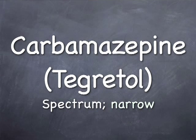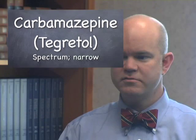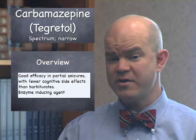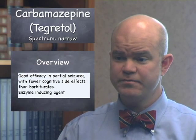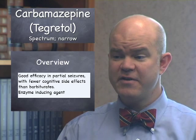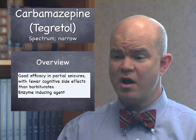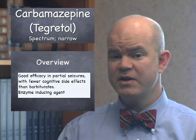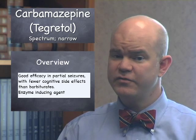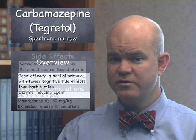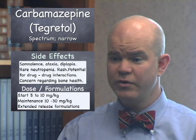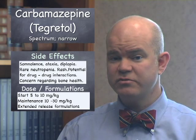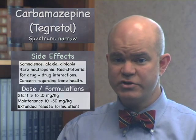Carbamazepine or Tegretol is another first generation anticonvulsant. This is a narrow spectrum agent, useful for partial seizures, and importantly it can make generalized seizures worse. It's generally thought to be effective with fewer cognitive side effects than the barbiturates. However, it is an enzyme-inducing agent, so it can interfere with the metabolism of other medications and may have adverse effects on bone health. Children can also experience ataxia or double vision on the medication.